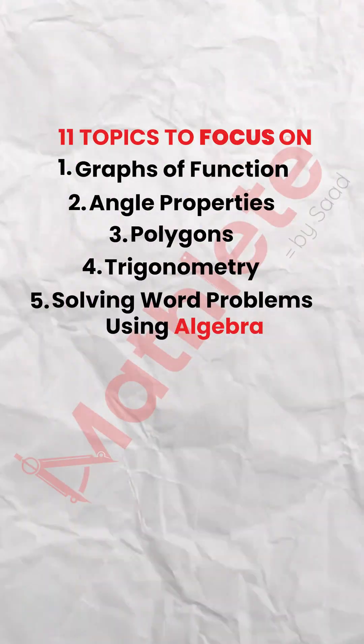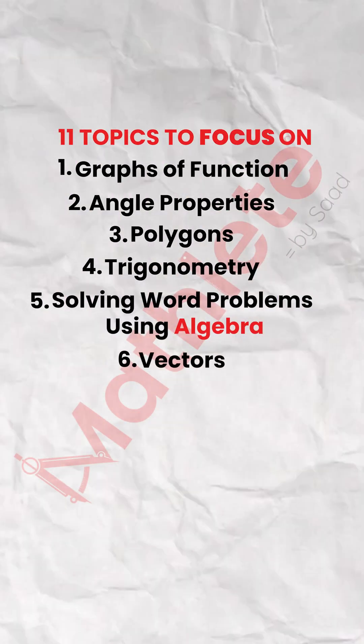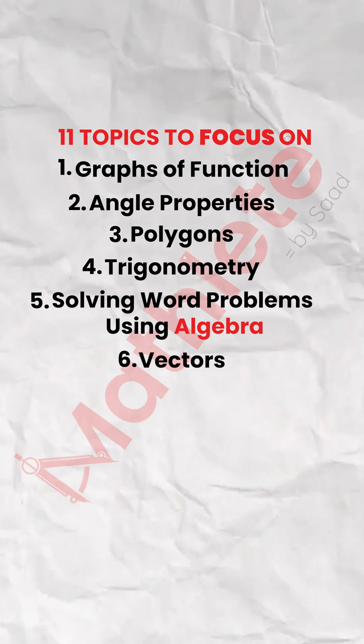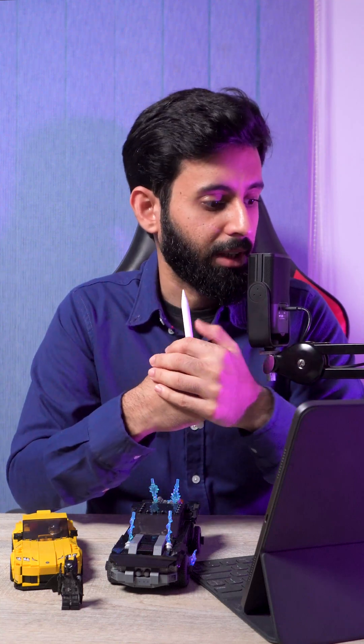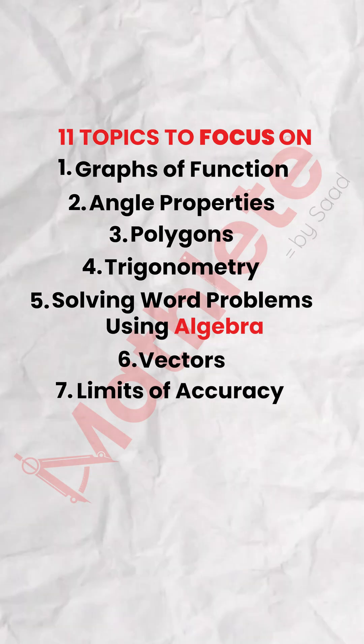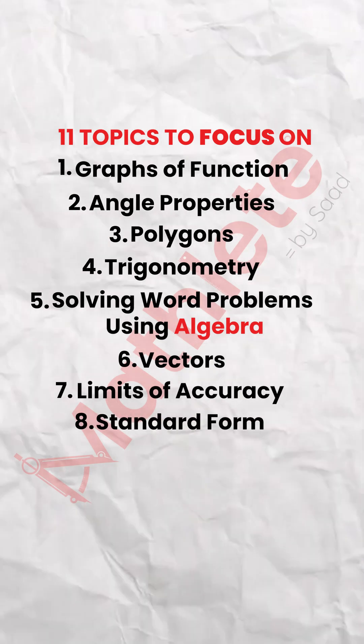Sometimes you have a question on graphs of functions that starts with proving an equation and then requires you to make a graph, so you can expect stuff like that. Vectors — I plan on doing a stream on vectors as well. I did a stream just before paper one on transformation and vectors expecting vectors would come in paper one, but that's exactly why I don't do guess papers. Then you have limits of accuracy, upper bound and lower bound — you can expect a question like that. And standard form as well.